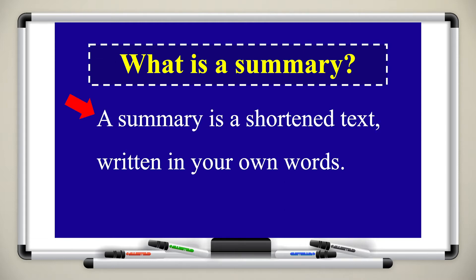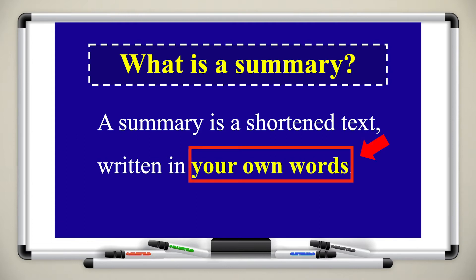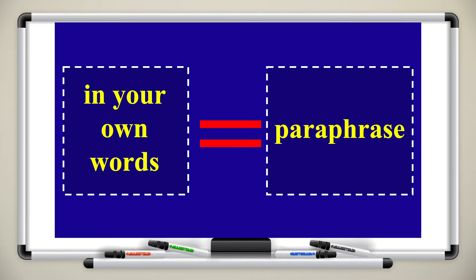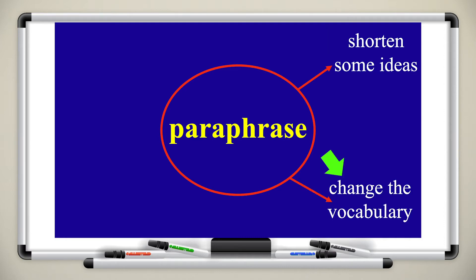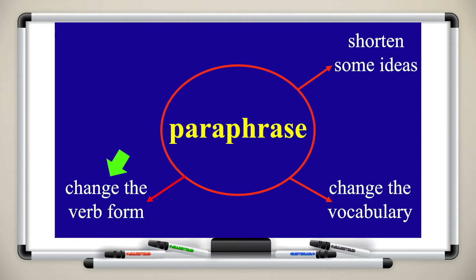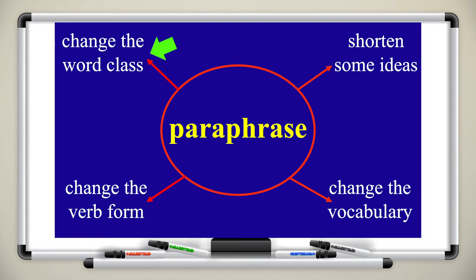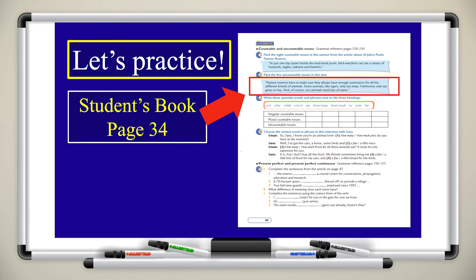A summary is a shortened text written in your own words. Pay attention — 'in your own words' means you have to paraphrase. How do you paraphrase? You can do so by shortening some ideas, by changing the vocabulary, changing the word or verb form — for example from active into passive — as well as changing the word class, for example from a noun to an adjective or a noun into a verb.